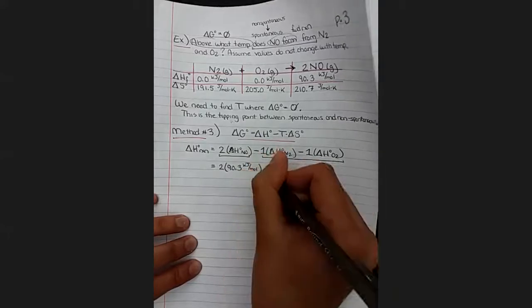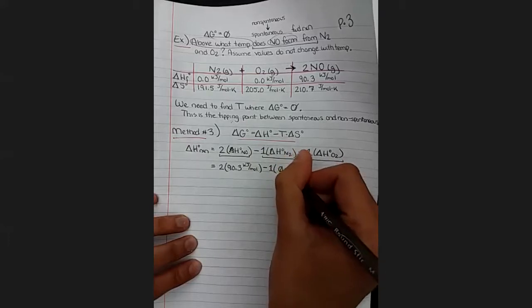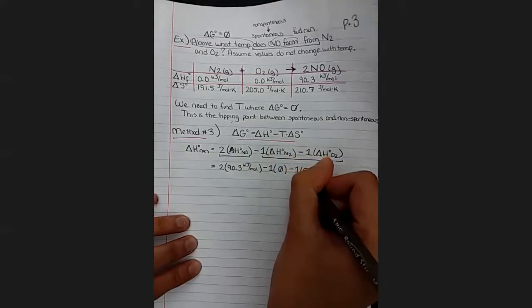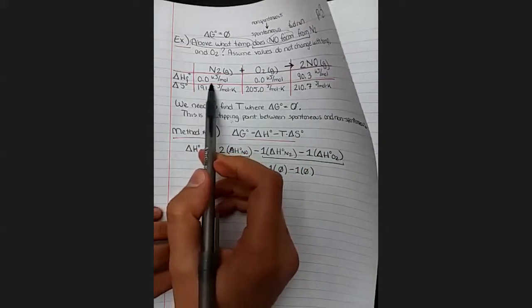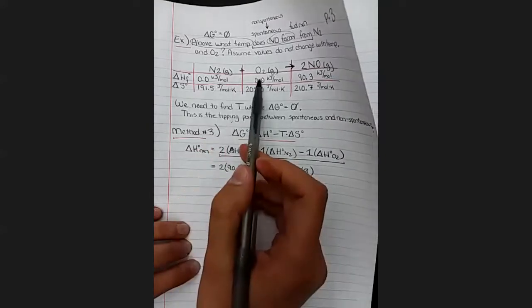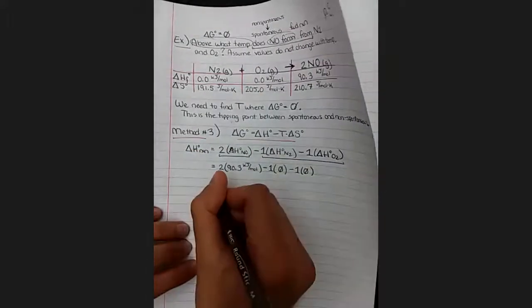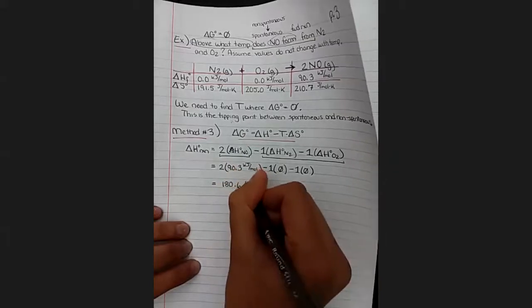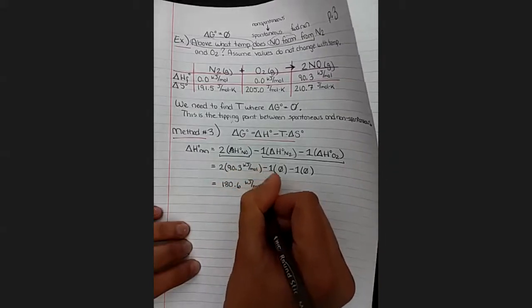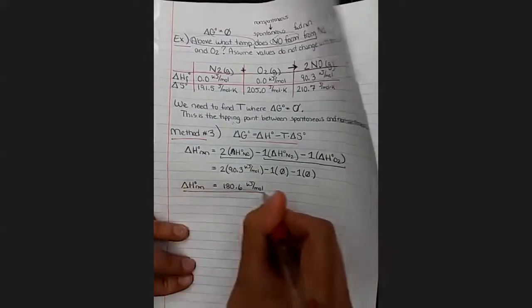One times zero, and one times zero. Zeros are my favorite thing to find, and remember we have zero for the enthalpy of formation of N2 and for O2 because these are pure elemental compounds in their standard state. So if we multiply that by two, we get 180.6 kilojoules per mole. Fabulous.